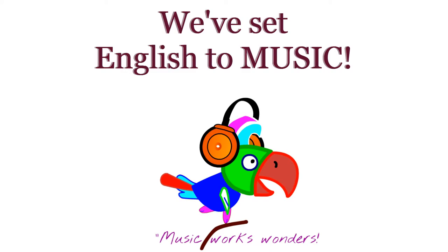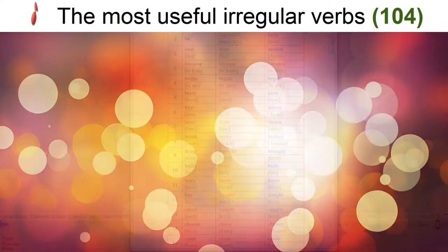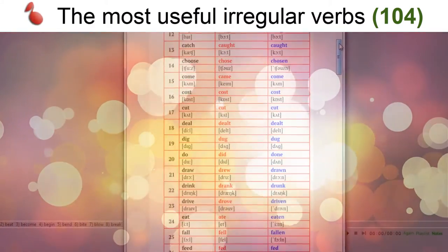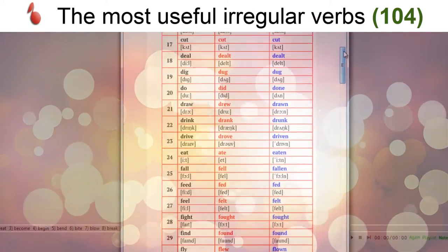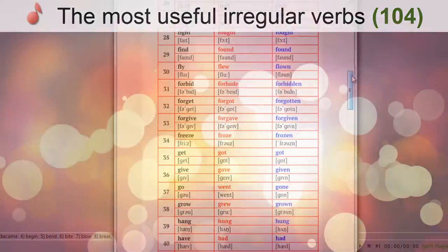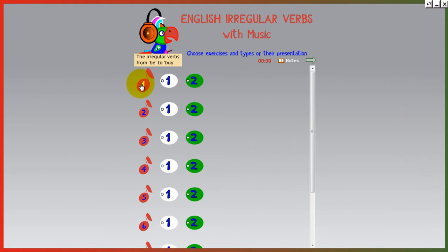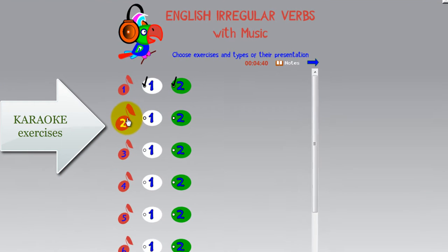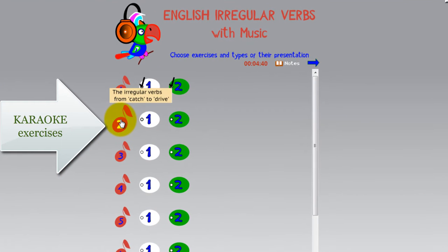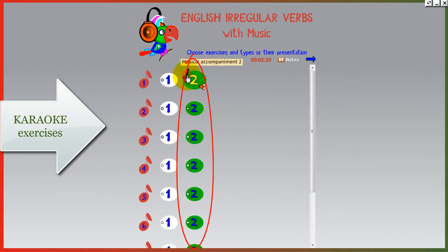To make rhythm help you, we had to set English to music. The program contains the most useful irregular verbs. Choose the group or groups of verbs that you want to practice. If you prefer a low-volume accompaniment, choose this sign.